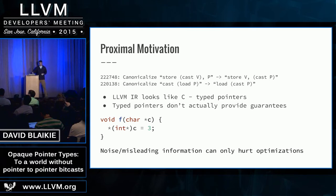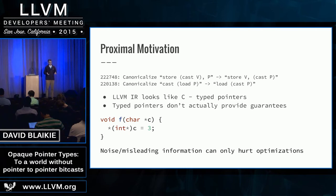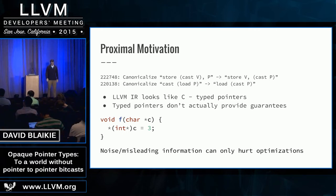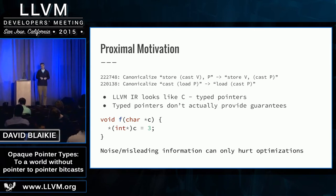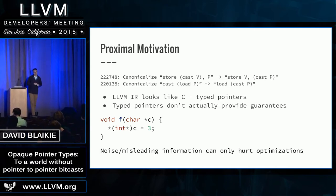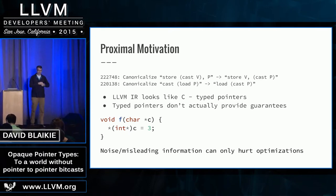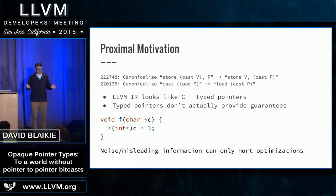To talk a little more about the representational problem: LLVM IR was modeled very much off C. Pointer types are kind of a guideline. You could write code like function F and it's totally correct C as long as you do some other stuff. But in LLVM IR, it's totally correct — we will not do anything wrong with this code. So the pointer types didn't really give us a lot from an IR perspective; they just get in the way of optimizations. They are, at best, a benign lie, and at worst, a misleading problem.